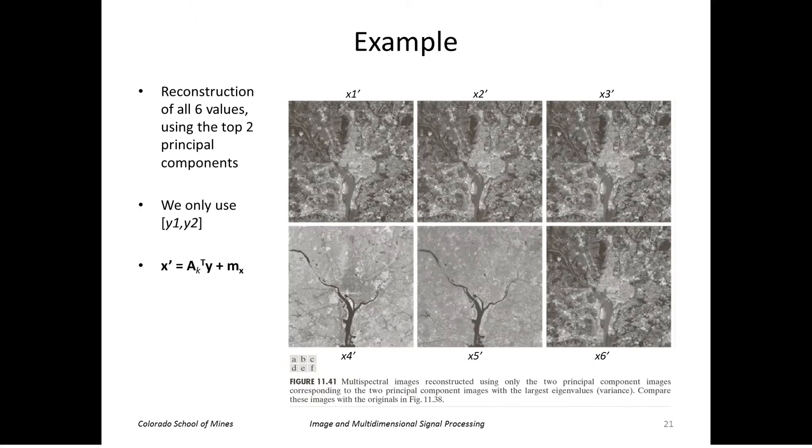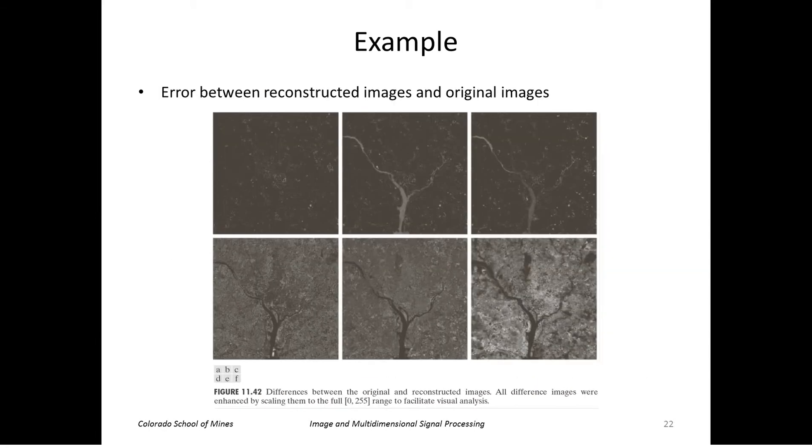So next, let's discard some of those principal components, all but two, and we'll reconstruct the original vectors using that approximation. We use only y1 and y2 from that previous slide. So this is the elements of the x vectors once we've reconstructed them. These look pretty close to the original images. Here is a plot of the error between the reconstructed images and the original images.